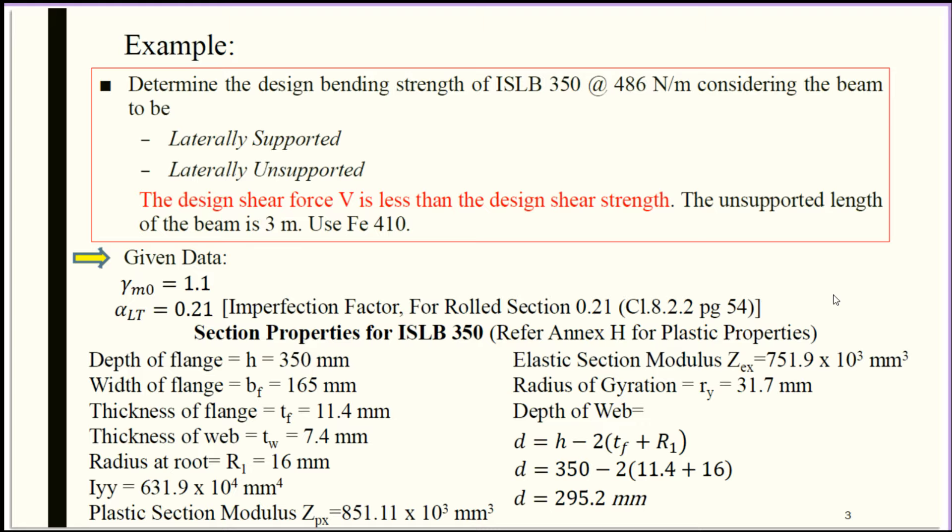As per given data and specifications from IS 800-2007, gamma M0 is 1.1, alpha LT, the imperfection factor for rolled section, is 0.21 (Clause 8.2.2, page 54). As the section is given, we need to write first its properties.